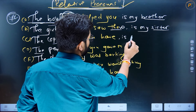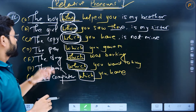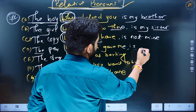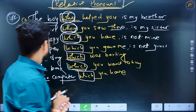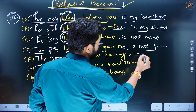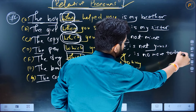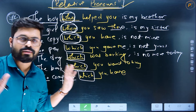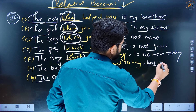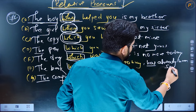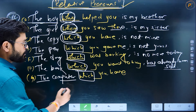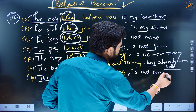The copy which you have is not mine. The pen which you gave me is not yours. Woh aapka nahi hai. The dog which was barking is no more today — woh aaj is duniya mein nahi raha. The book which you want to buy has already been sold — woh pahle se bik chuki hai. The computer which you have is not mine — mera nahi hai.